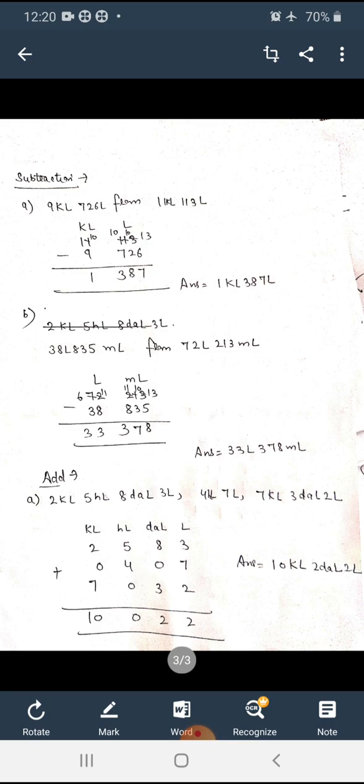Dear students, add here. More units are there: two kiloliter, five hectoliters, eight decaliter, three liter, and then four hectoliters, seven liter, and seven kiloliter, three decaliter, two liter. So remember the table you have written in sequence: kiloliter, after that hectoliters, decaliter, and liter.